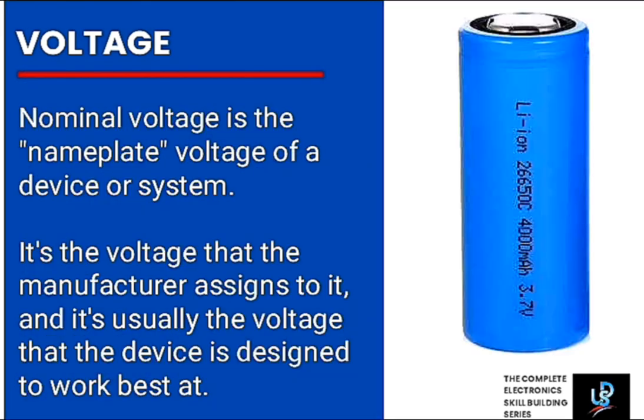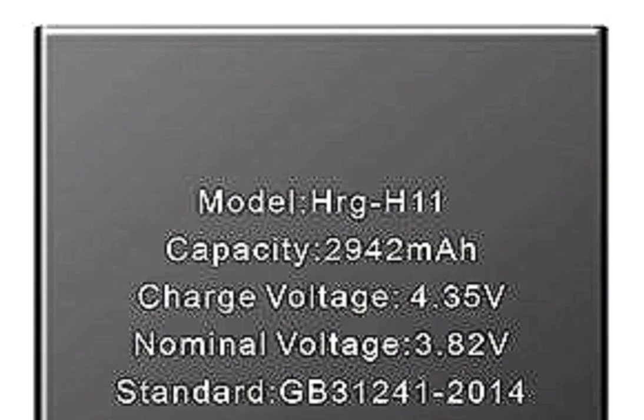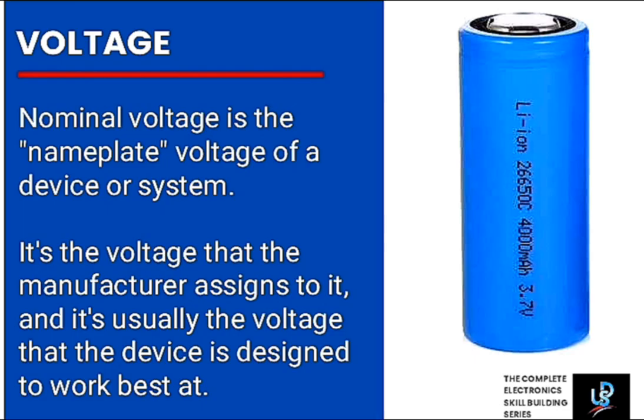We have nominal voltage. This voltage is the nameplate voltage of the device or system. Here is a lithium battery with a nominal voltage of 3.7V boldly printed on it. Here is another case example where the nominal voltage is 3.82V. Nominal voltage is the voltage that the manufacturer assigns to it.